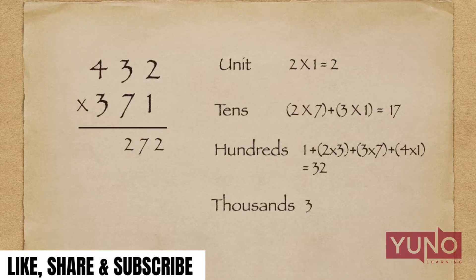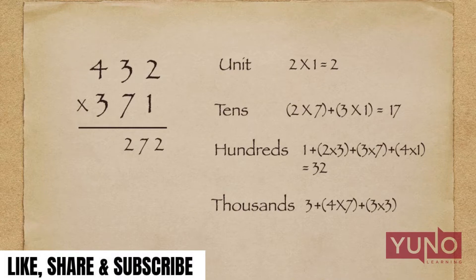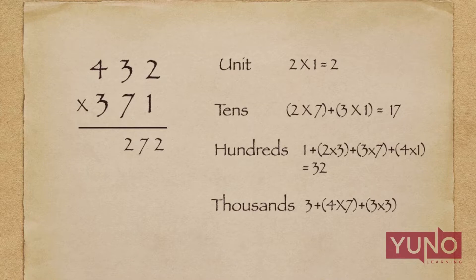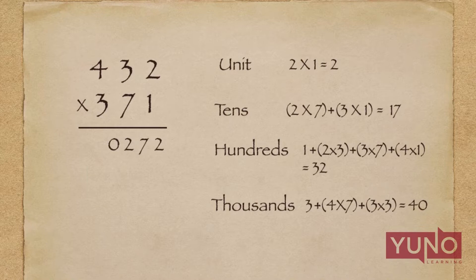This 3 will be used in the next step. I will perform the cross multiplication of the first two digits — that is 4 × 7 and 3 × 3 — and add all these multiplications along with the carry. The total will be 40. I will write 0 in the answer and 4 will be the new carry.